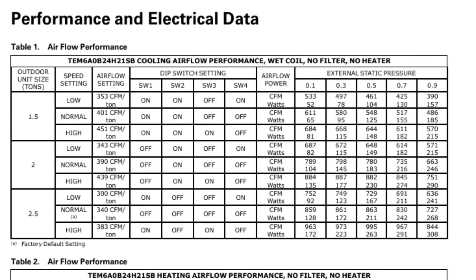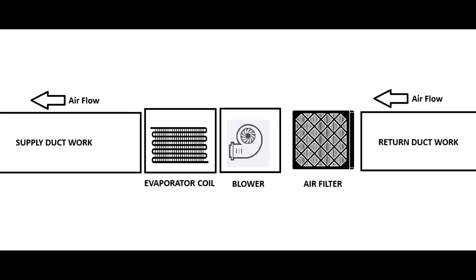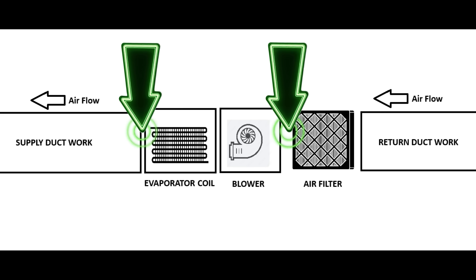If you look at the top of this performance data chart, you're going to see 'wet coil, no filter, no heater.' This tells me they included the evaporator coil in their static pressure test — specifically when it was wet, meaning the air conditioning was running, humidity was condensing out of the air, and the coil was actually wet. That water on the coil is another form of resistance. The chart also says 'no filter,' meaning they did not include the filter in their static pressure test. So in this case, I'm going to place one probe between the air filter and the blower casing, and the other after the evaporator coil before the supply ductwork, and I'll take my reading only when the unit is condensing and making water.